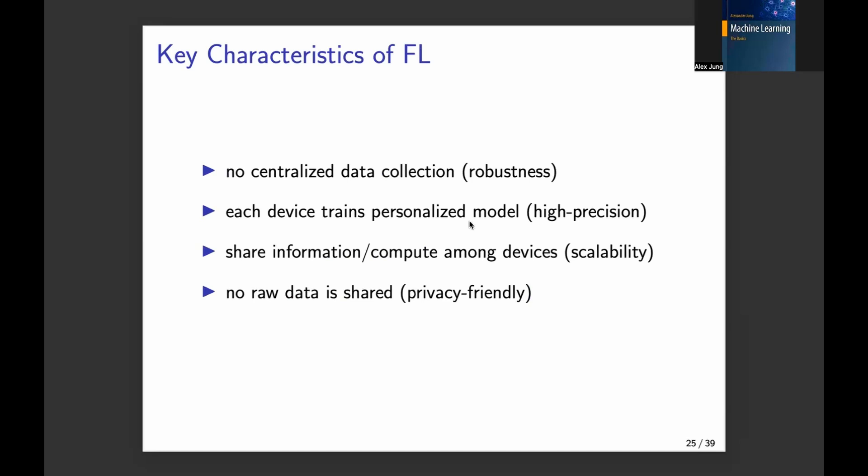A second characteristic is that each device trains a personalized model. This is a natural way to obtain personalization — you train a model for each individual user or device. These models can be way more precise than an average model. For example, if you want a prediction for how long a certain bicycle ride takes you, you want a prediction tailored to your fitness level and your bike, not an average prediction.